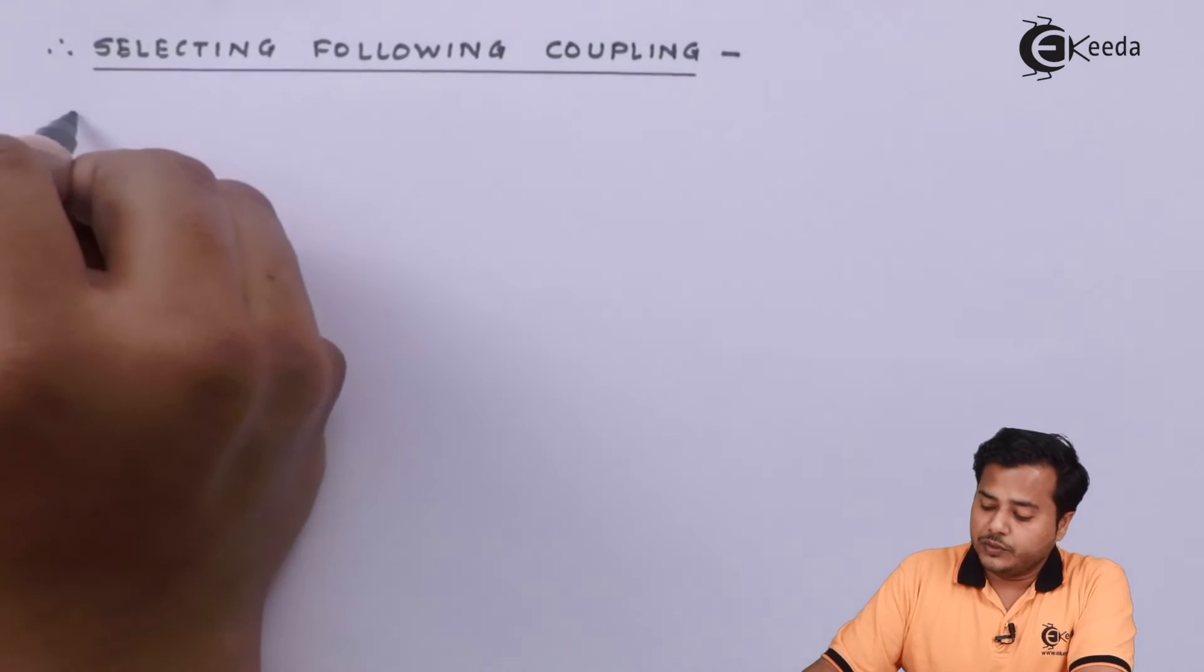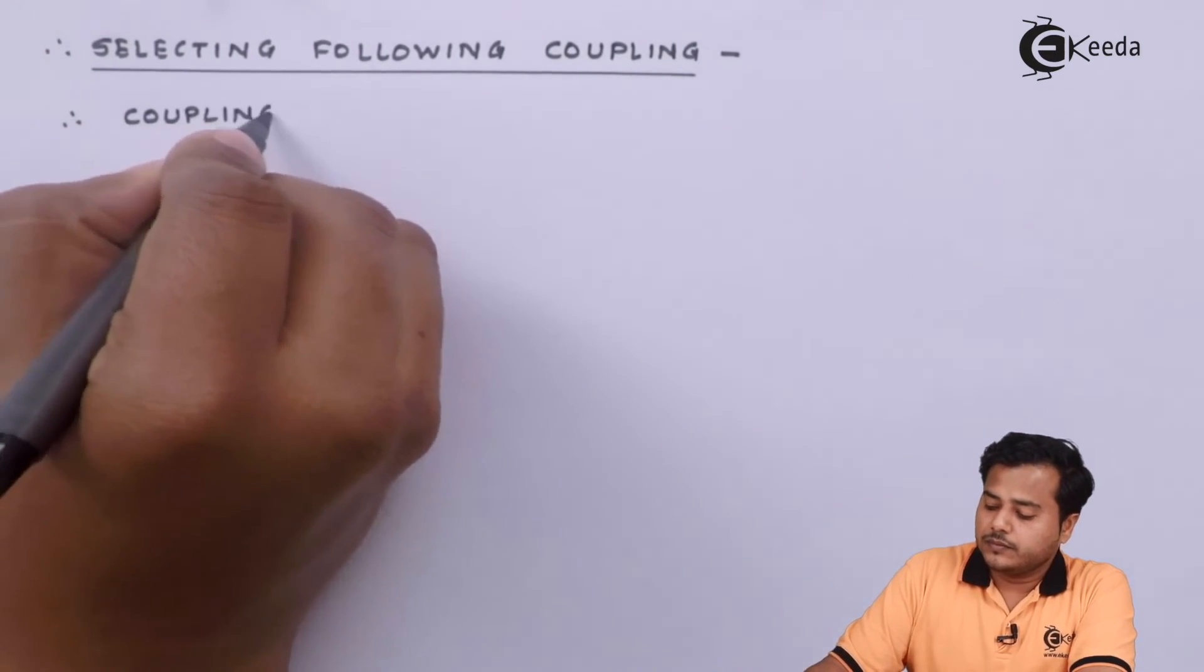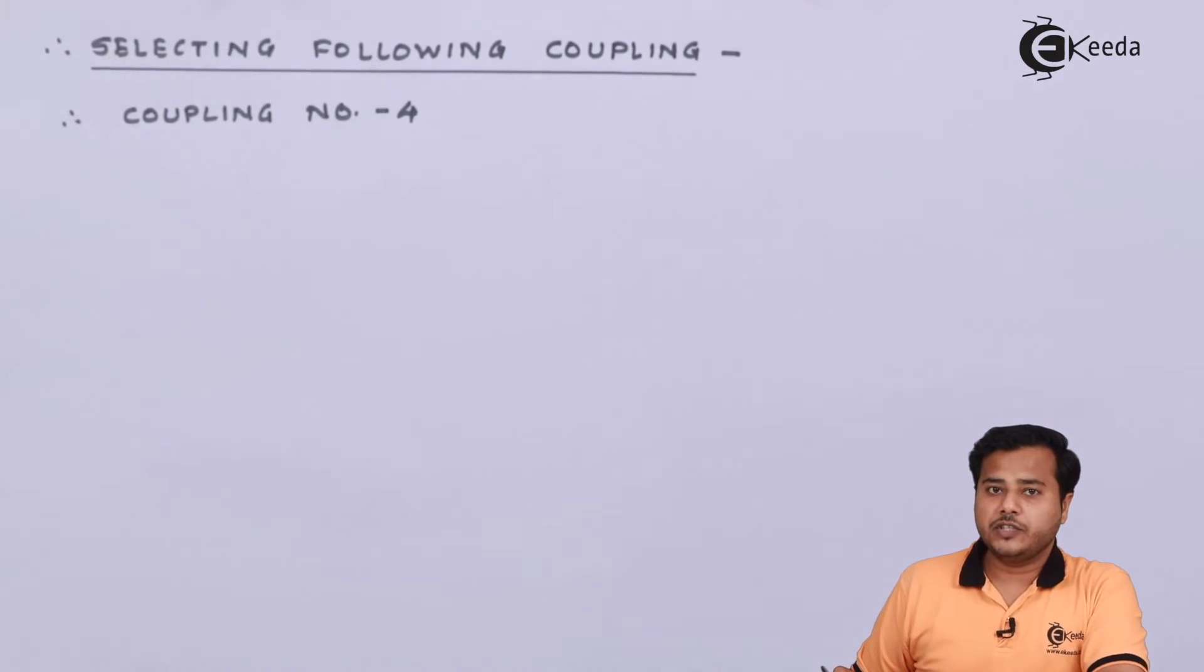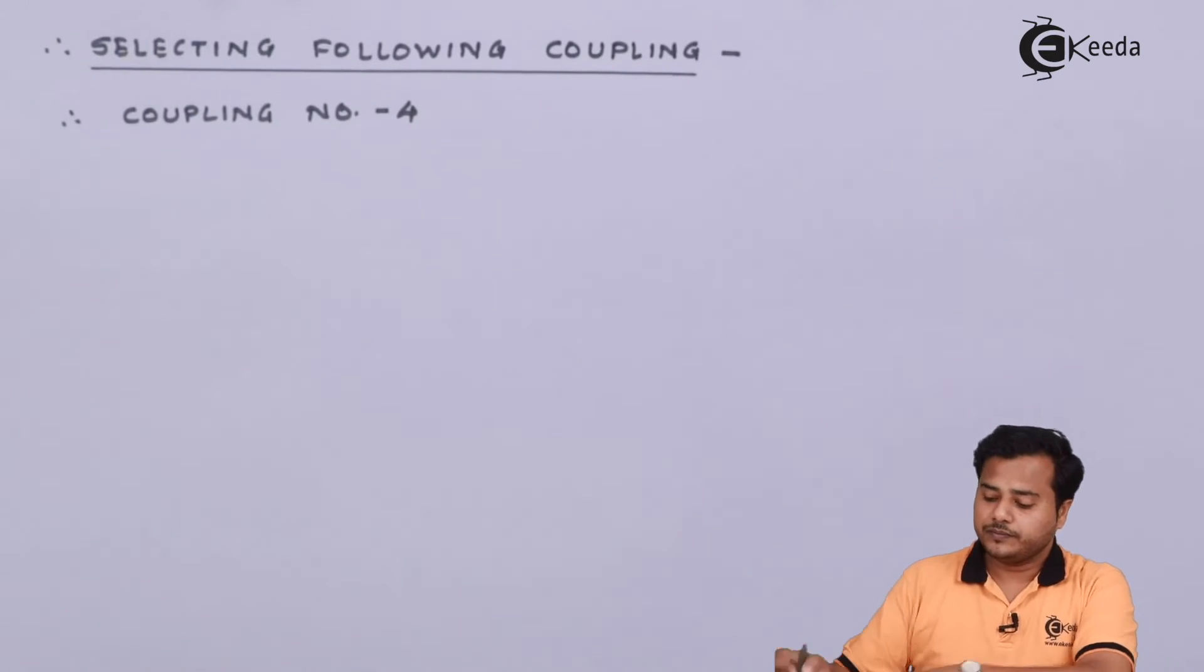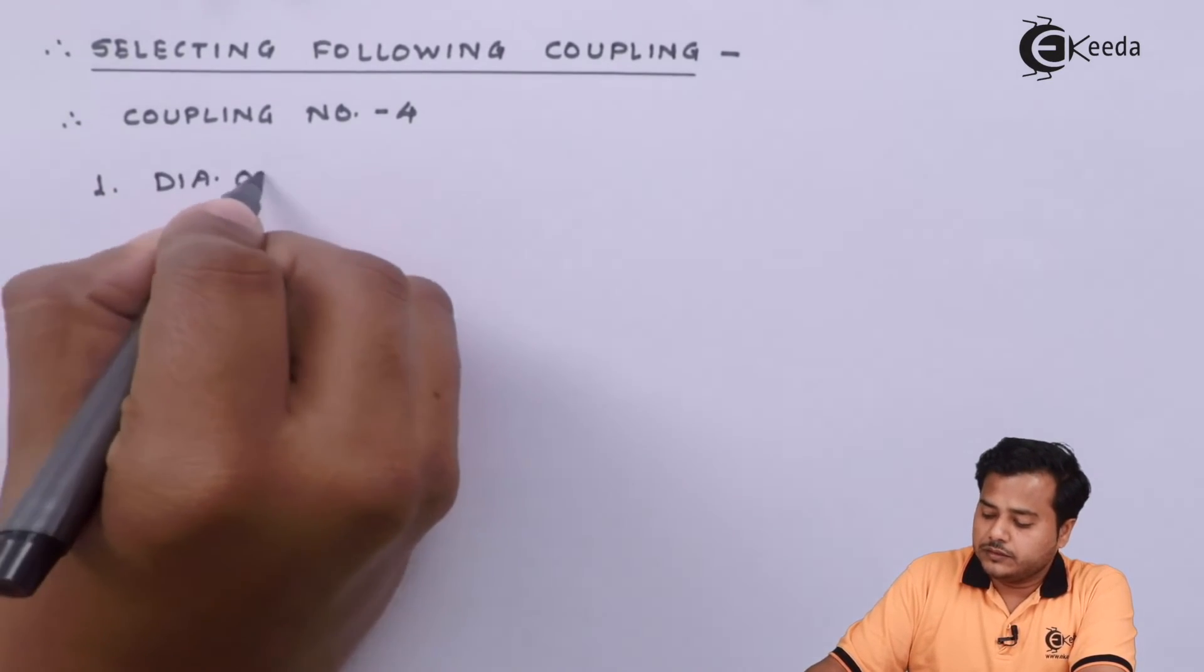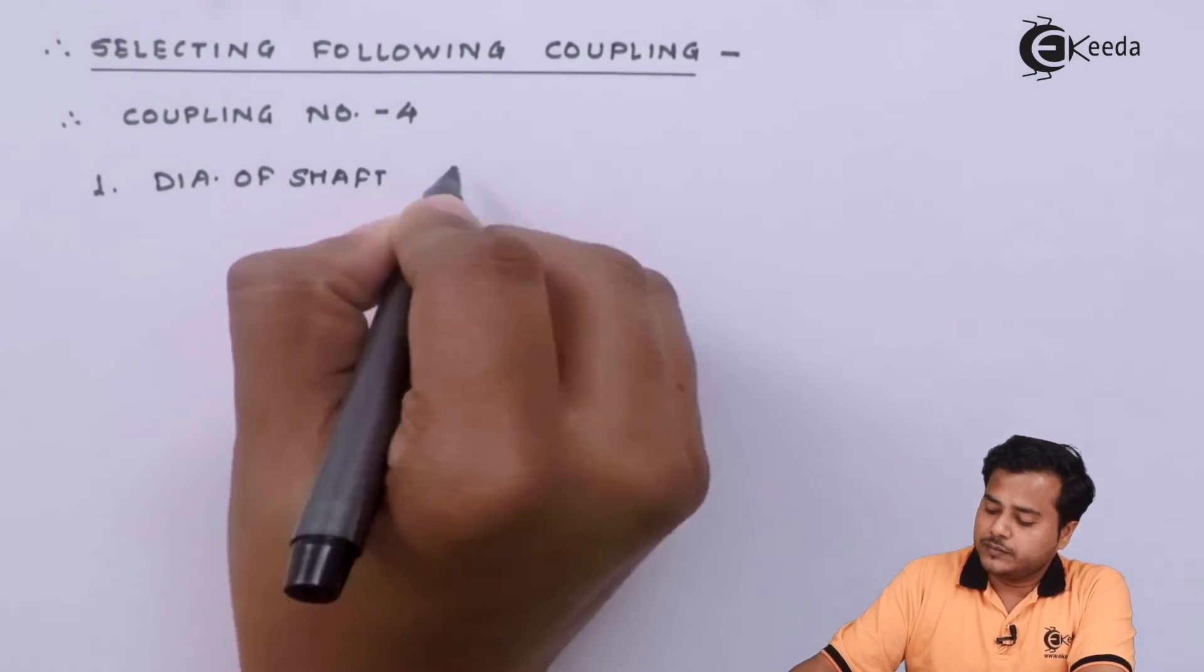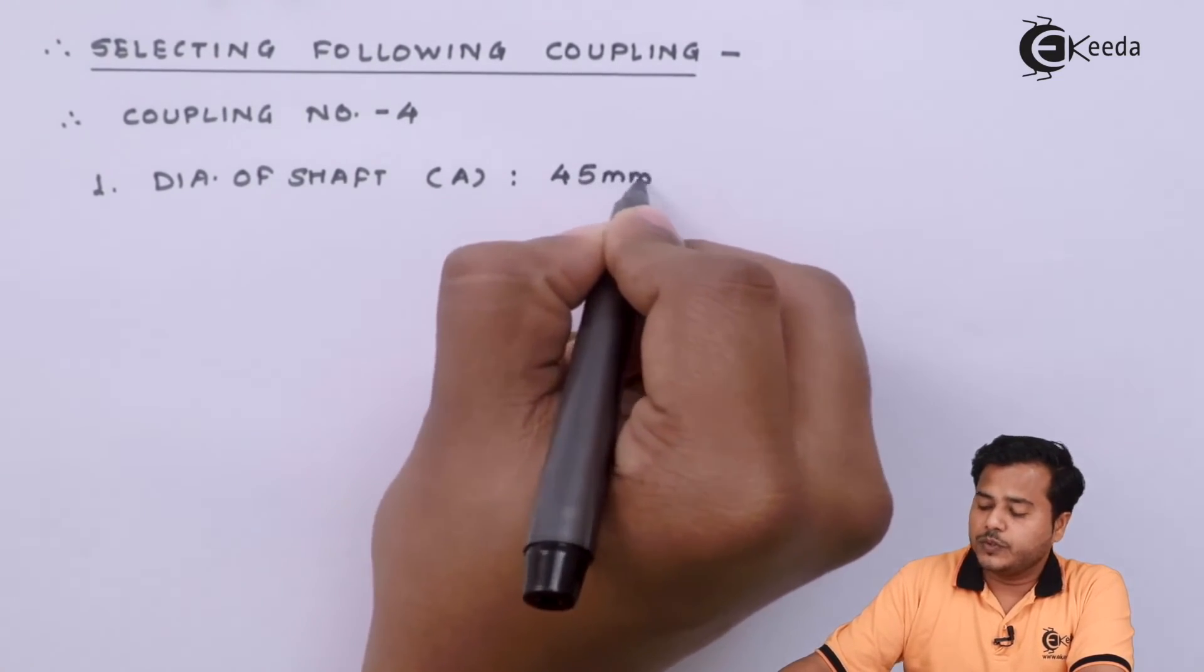Therefore if you refer to the PSG data book there is the coupling number 4 that is suitable for this particular kilowatt rating. Now there are many designations for these dimensions we can use but we can name them differently also. So let us use alphabetical order for those dimensions. Let us go one by one. The first one is of course the dimension of shaft or diameter of shaft.